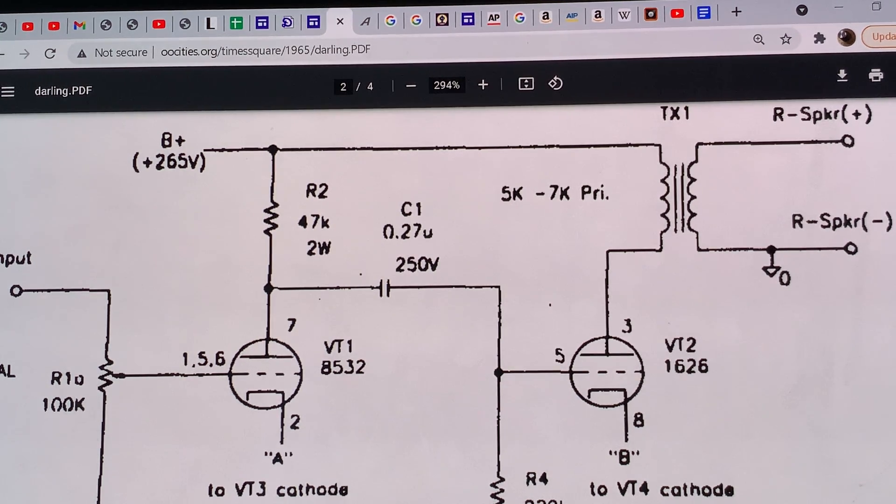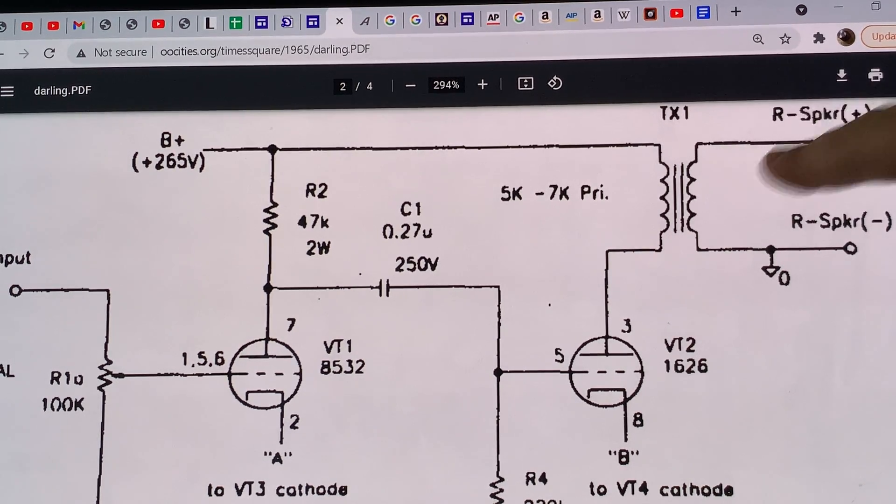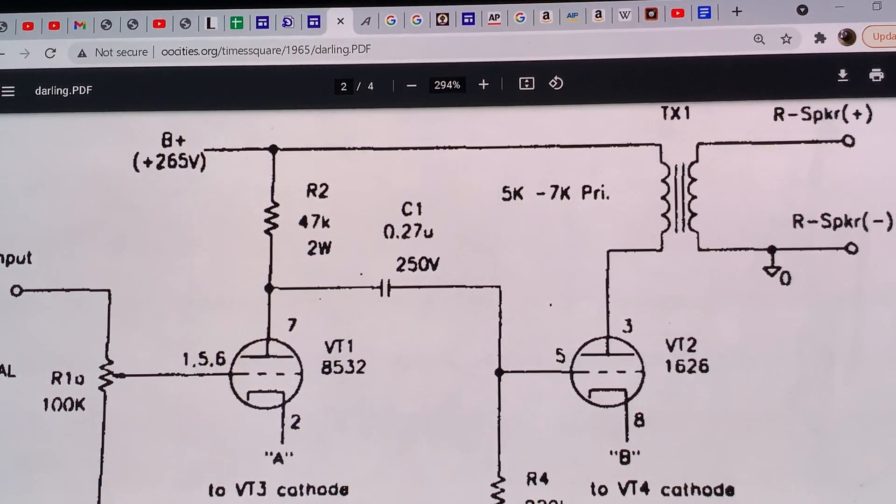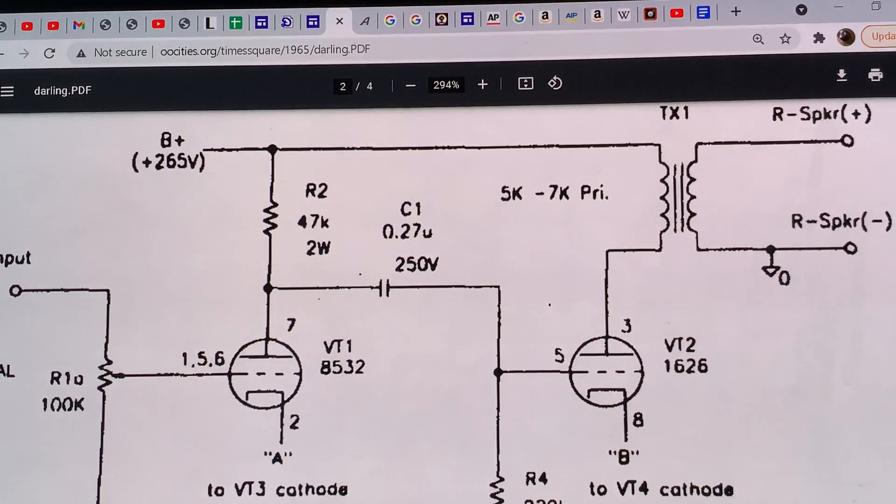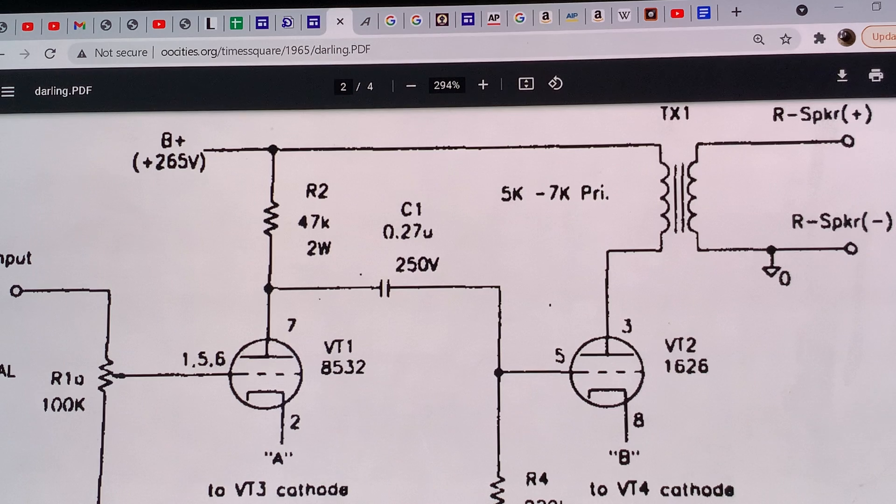or to any of the commercial vacuum tube amplifiers costing maybe three, five, $10,000, then you have to forget about using a cheap output transformer. You have to use a Hashimoto or a Lundahl, maybe go for a Tango. And of course, a pair of Hashimotos is $1,000, and that gives you a clue why a quality triode amplifier starts around $3,000 when we're talking about single-ended amplifiers.